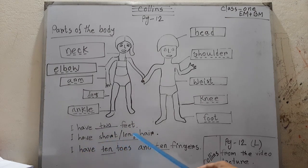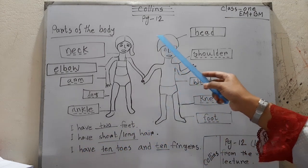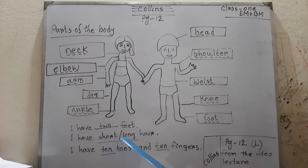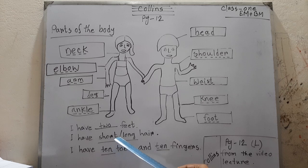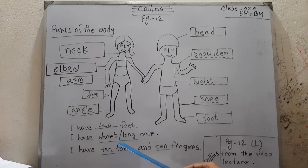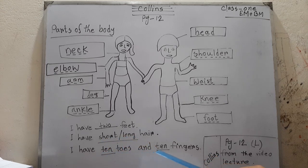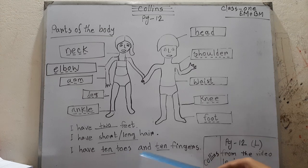I have [blank] hair. Hair means 'tul' in Bengali. I have short or long hair — 'short' means 'khato' and 'long' means 'lomba'. Then: I have [blank] toes and [blank] fingers. Toes means 'payer angul' and fingers means 'hater angul'.